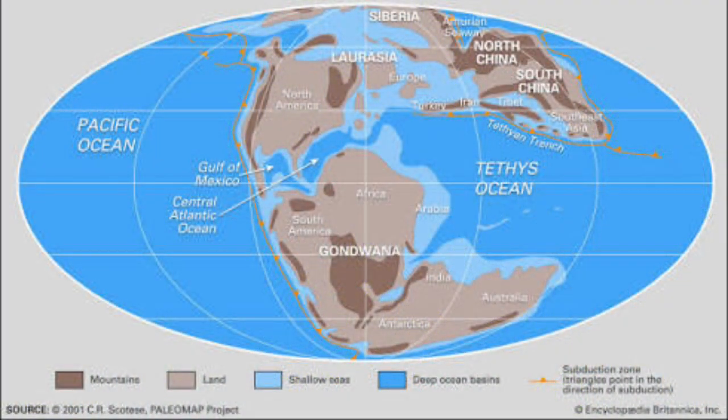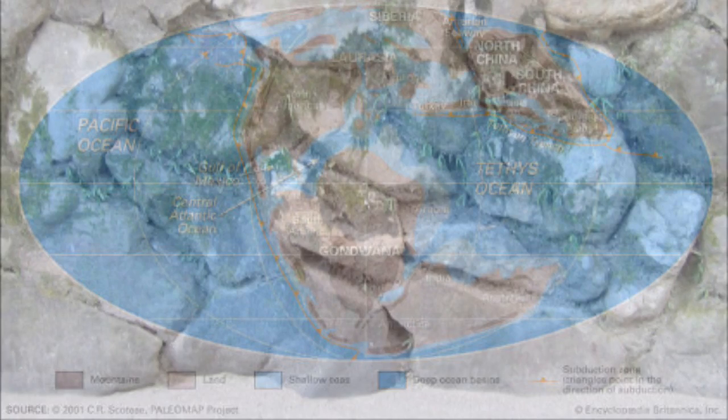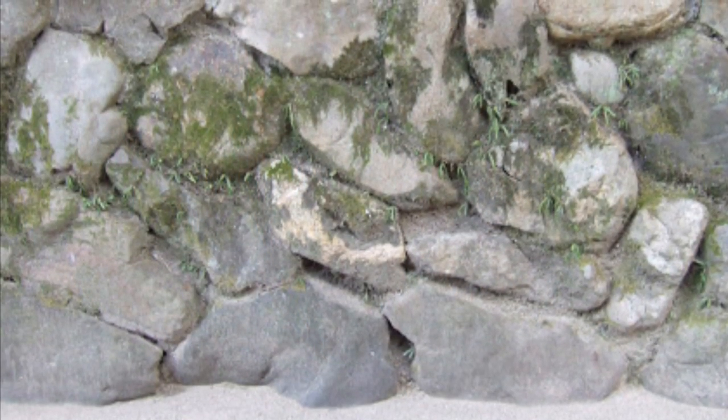Important Jurassic exposures are found in Russia, India, South America, Japan, Australia, and the United Kingdom. In India, the start of the Jurassic period and the end of the Triassic is marked by the Khadir limestone.